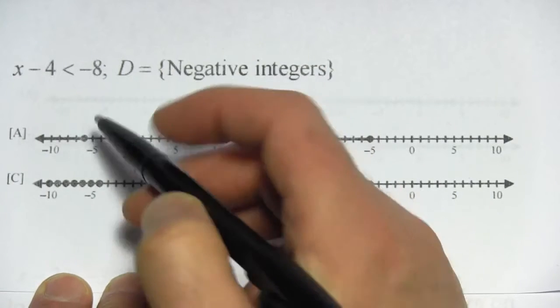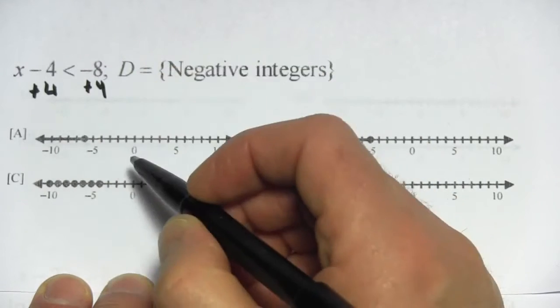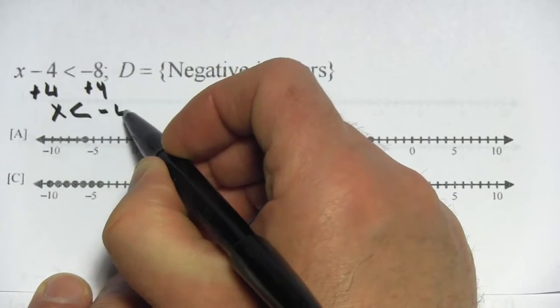We've got x minus 4 is less than negative 8, so we can get x alone by adding 4 to both sides. We will get x is less than negative 4.